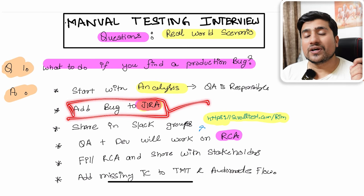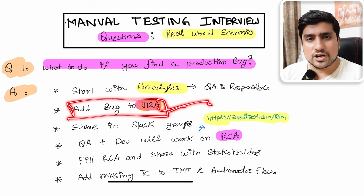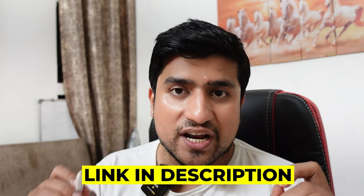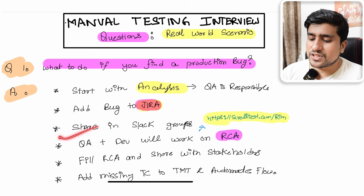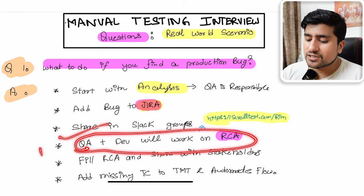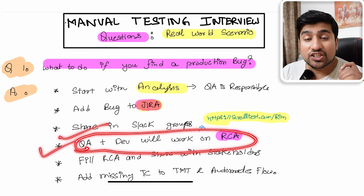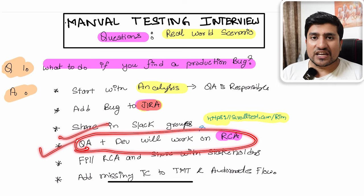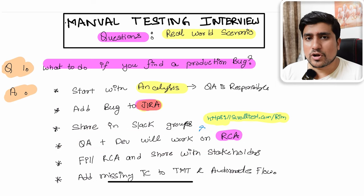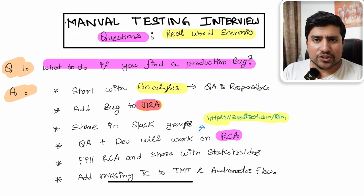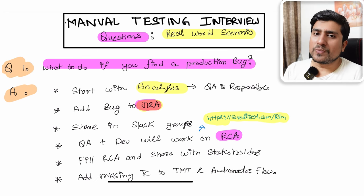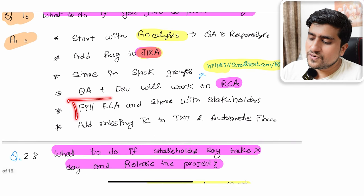The first thing you have to do is add this bug to a bug tracking tool — it can be JIRA. I've already provided a bug reporting template in the description which you can download. Once you've found the information and confirmed there's a P0, share it within the team. QA and Dev will work on the RCA — Root Cause Analysis. This is an important document that needs to be created so we understand production bugs.